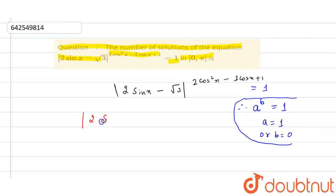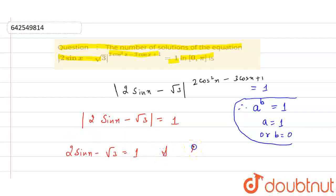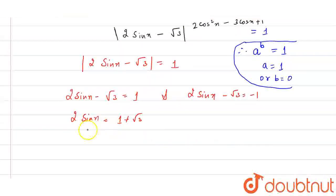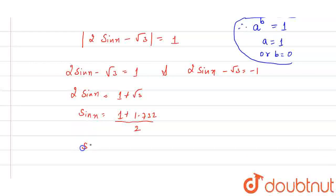From here we get two things. The first is: mod of (2 sin x minus root 3) equals 1. Opening the mod, we get 2 sin x minus root 3 equals 1. The value of root 3 is approximately 1.732, so sin x equals (1 + 1.732) / 2, which is about 1.366. Since sin x cannot be greater than 1, this value is not possible.